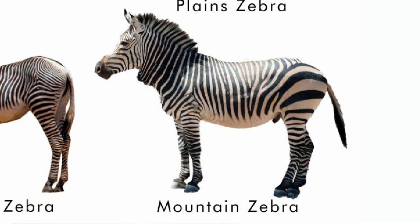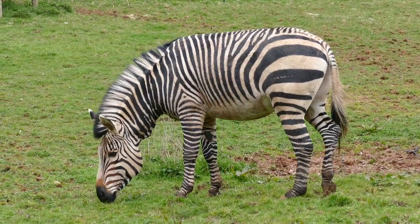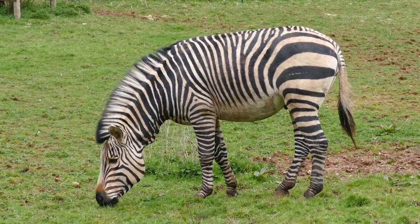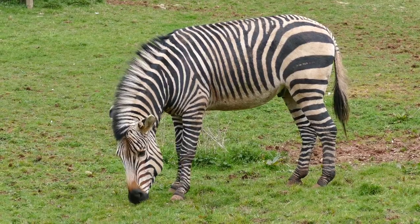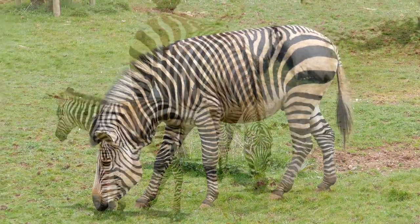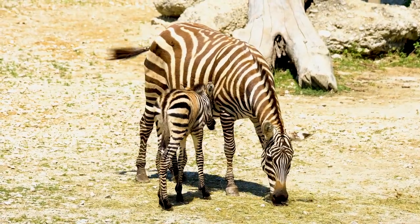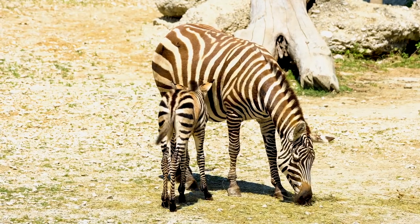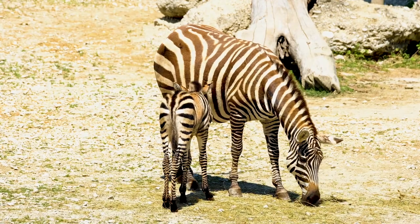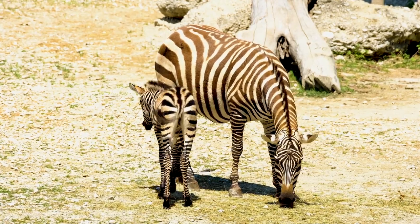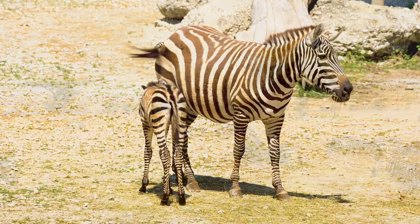Mountain zebras: The mountain zebra is divided into two subspecies — Hartmann's and Cape mountain zebra — found primarily in Namibia and western South Africa. This species favors mountainous areas. Its stripes are thinner and more numerous than those of Burchell's zebra, and it has broad stripes on its rump and a dewlap — a fold of flesh on its throat — that other zebras do not have. Both subspecies are listed as threatened, with land cultivation now posing a greater danger than hunting.